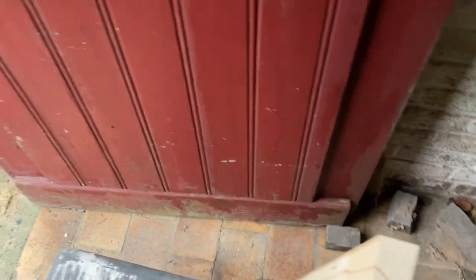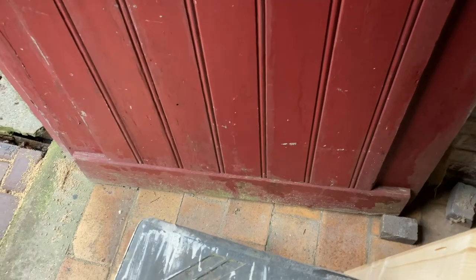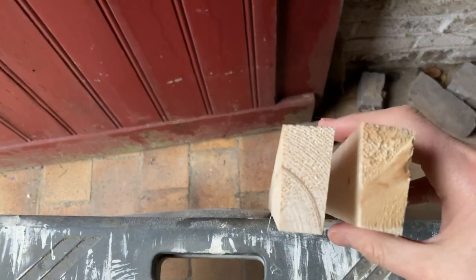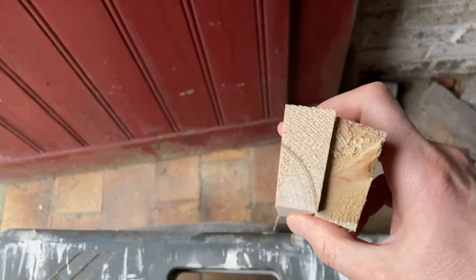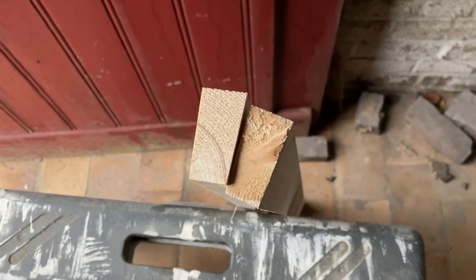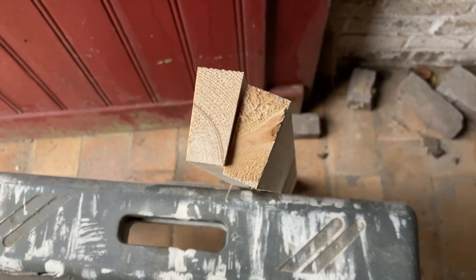So when you put those two together afterwards, you get a dihedral angle. A dihedral angle is the angle between two adjacent faces, and this is how the entire dome is made.